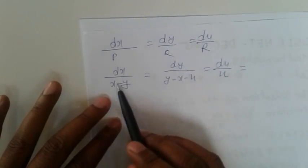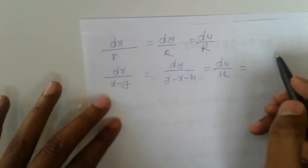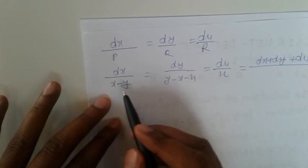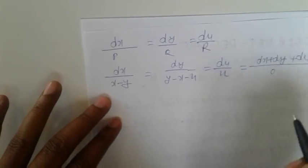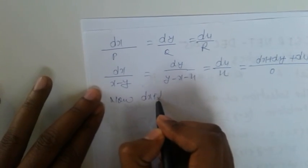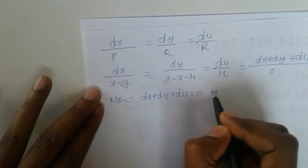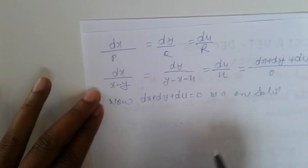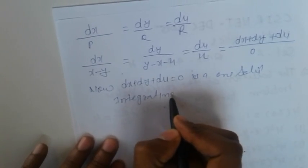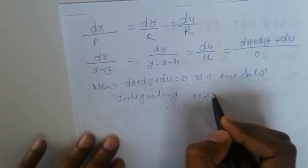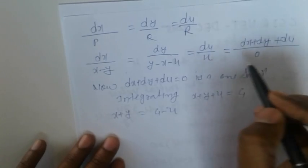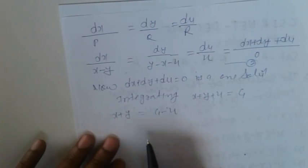Adding the numerators and denominators: dx + dy + du over (x minus y) + (y minus x minus u) + u. The x and y terms cancel, leaving denominator zero, so dx + dy + du = 0. Integrating gives the first integral: x + y + u = c1.